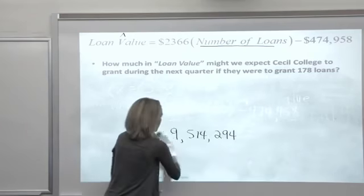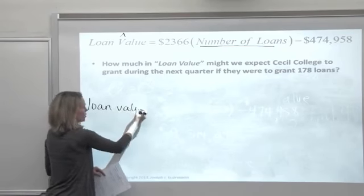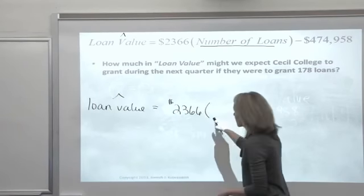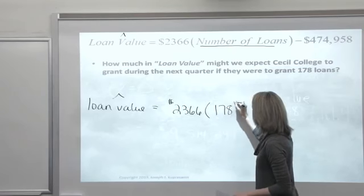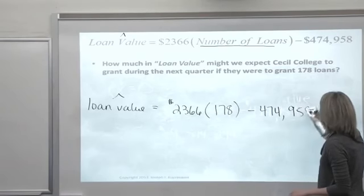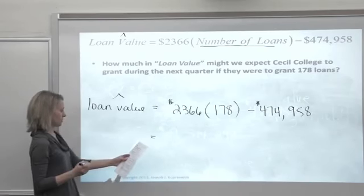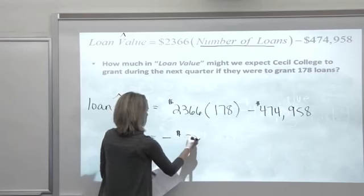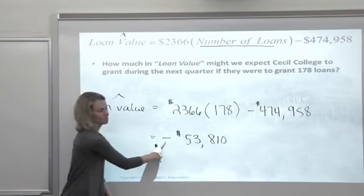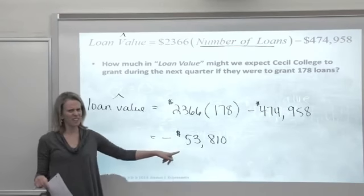We're going to do the same thing. Take your regression equation. This time we're going to predict the loan value for a school that issued 178 loans. And when we plug that in the calculator, wait a minute. That's a negative. If you type that in your calculator, you actually get a negative value.